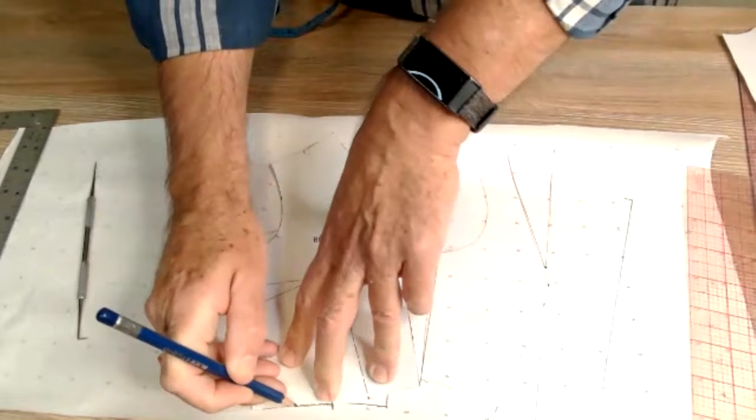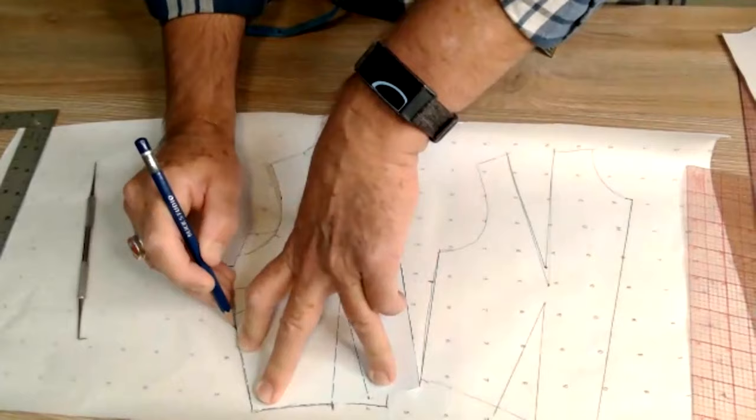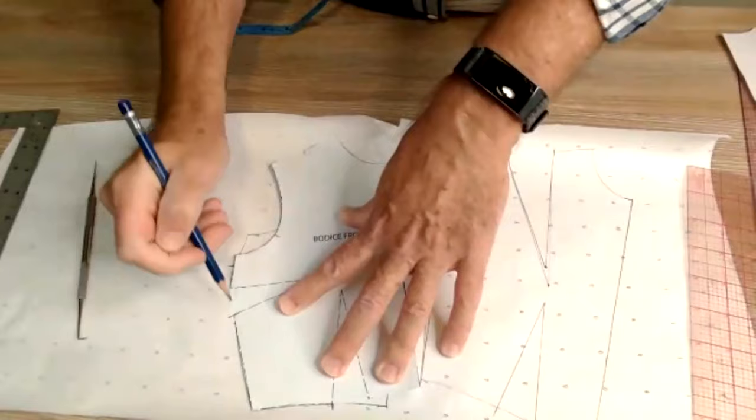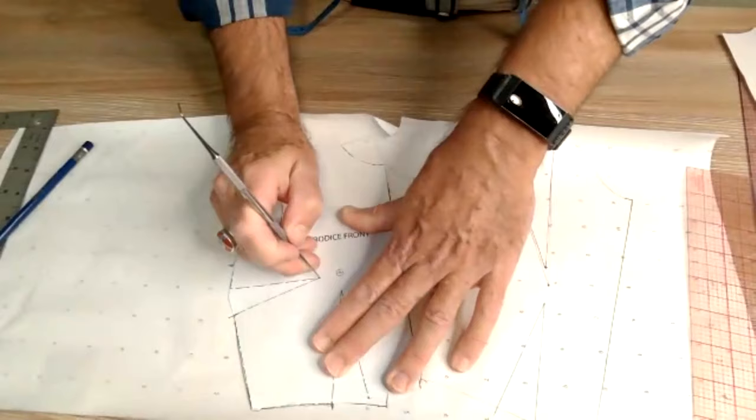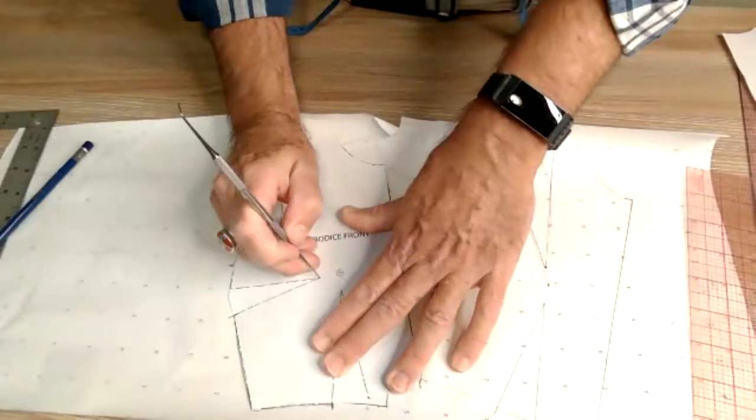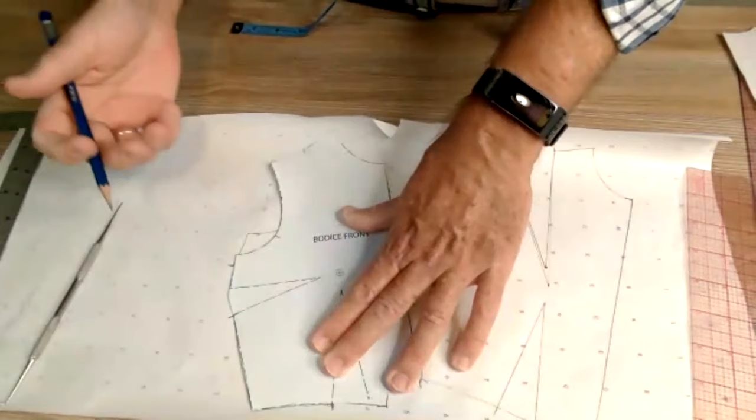What we've done is we've just effectively closed that dart up. So we just keep tracing once we close that dart up, come around, and then when we get to the bottom of the dart, the place across from where we started, then we want to go ahead and mark.